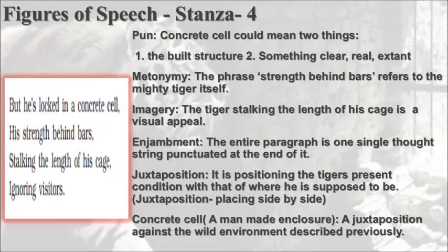In stanza 4, he introduces pun. Pun is exploiting multiple meanings of the same word in a given situation. Here, the phrase 'concrete cell' can be decoded in two ways: one as a defined built structure, and another as something clear, real, and perceivable. It becomes a pun as it is the present perceivable reality for the tiger, as opposed to where he belongs — the jungle.